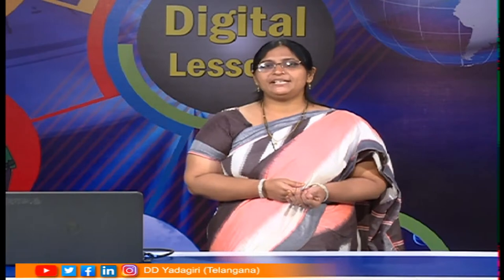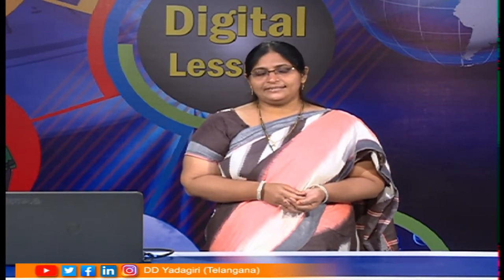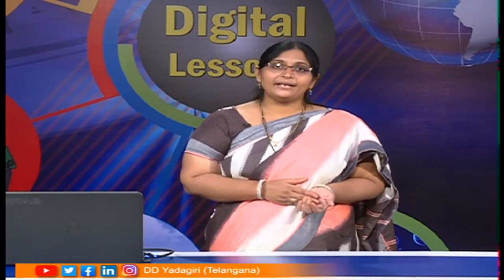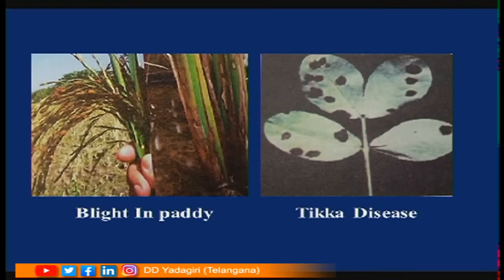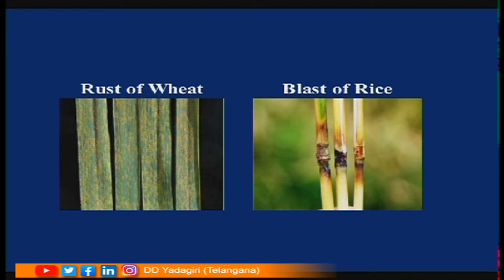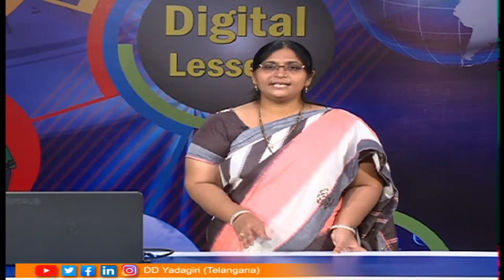Not only human beings and animals, but plants also get diseases — from virus, bacteria, fungus, etc. Examples of plant diseases include: ergot of bajra, leaf spot of rice, blight in paddy, tikka disease in groundnut, rust of wheat, and blast of rice. These diseases are caused by insects, fungus, bacteria, or virus.